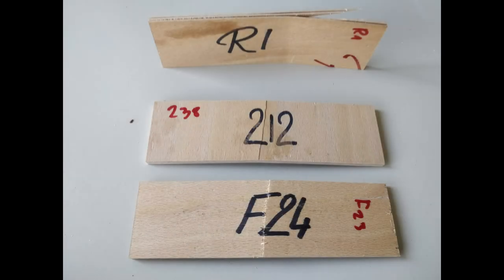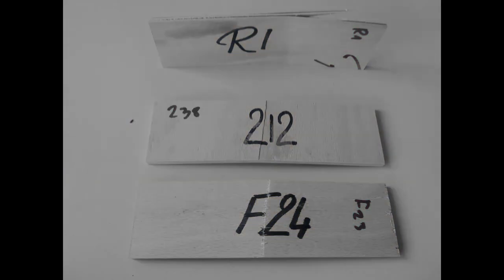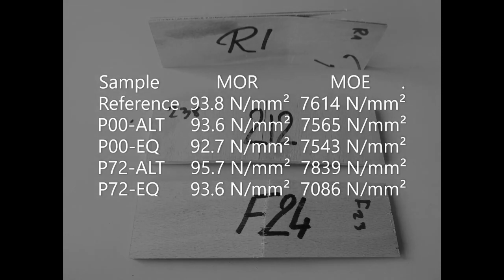Bending strength tests were performed for 12 specimens per data point. The modulus of rupture did not show a significant difference, but the modulus of elasticity was, on average, slightly reduced on the plasma pretreated samples.